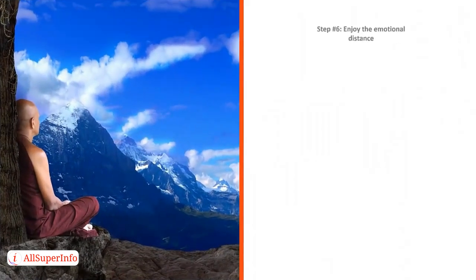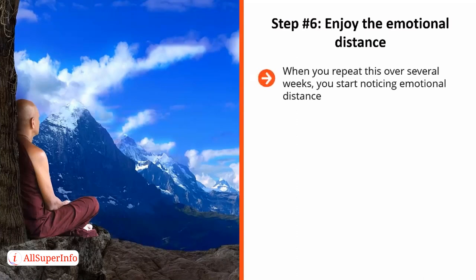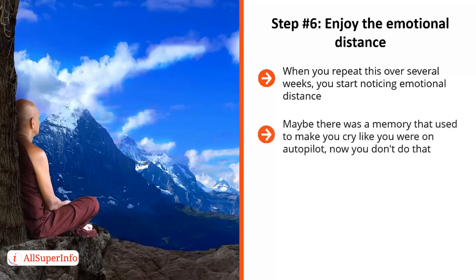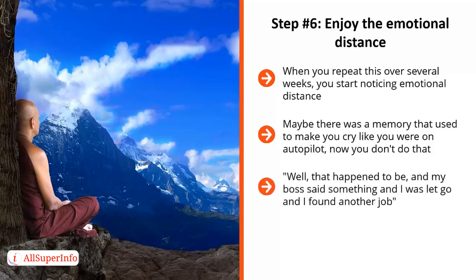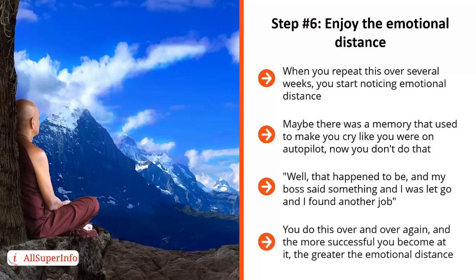Step number six: enjoy the emotional distance. When you repeat this over several weeks, you start noticing emotional distance. Mental images, memories, or what have you that used to throw you off track no longer do. Maybe there was a memory that used to make you cry like you were on autopilot — now you don't do that. You just say, well, that happened to me when I was four years old, and you let it pass. That was my boss saying something, and I was let go, and I found another job — you let it pass. That was my best friend and my ex-girlfriend — you let the memory pass. You do this over and over again, and the more successful you become at it, the greater the emotional distance. Eventually, all that stuff that used to drag you down and hold you back is left in the past.